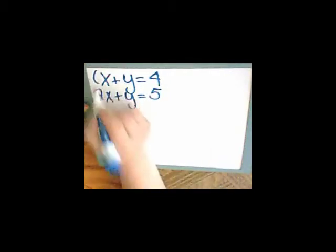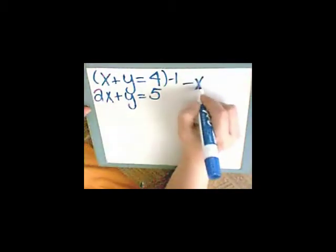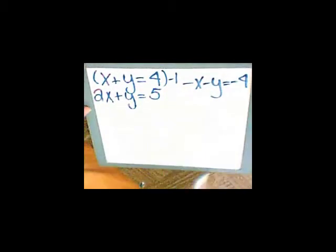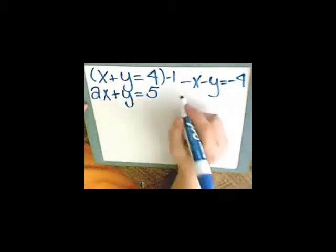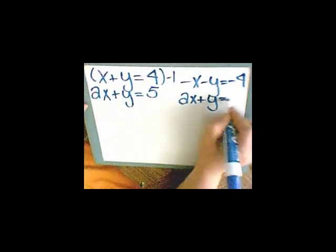I'm going to multiply this equation by negative 1. That gives me negative x minus y equals negative 4. The second one I'm going to leave alone. 2x plus y equals 5.